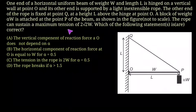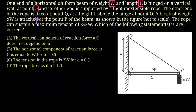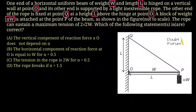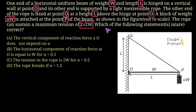Hello friends, welcome to Doubt Forum. Today's question is: one end of a horizontal uniform beam of weight W and length L is hinged on a vertical wall at point O, and its other end is supported by a light inextensible rope. The other end of the rope is fixed at point Q at a height L above the hinged point O. A block of weight alpha times W is attached to point P on the beam. The rope can sustain a maximum tension of 2√2 W, and we have to find the correct options.